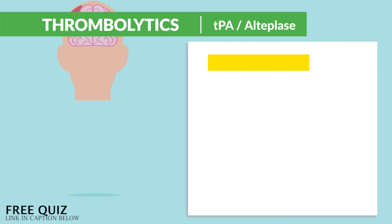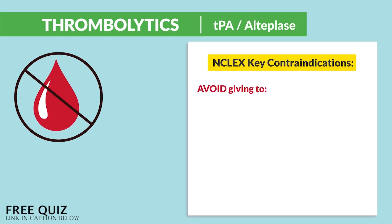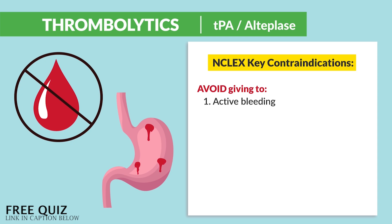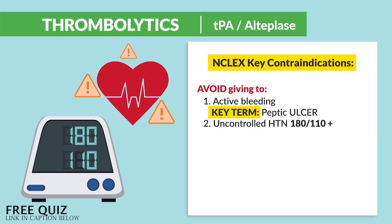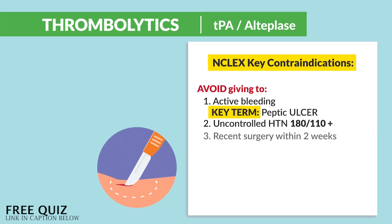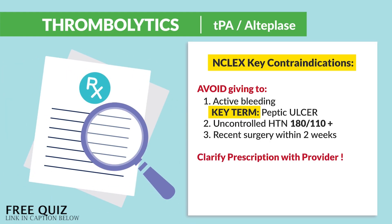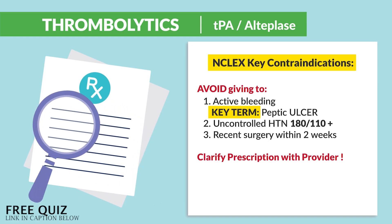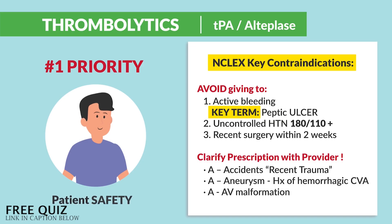Now the absolute contraindications, because of the big risk for hemorrhaging: we avoid giving to any patients with number one, an active bleed — key term, peptic ulcer. Number two, uncontrolled hypertension — anything 180 over 110 or higher. Number three, recent surgery within two weeks. Big key term — always clarify the prescription with the provider. This is huge on NCLEX and exit exams, since our number one priority is patient safety.